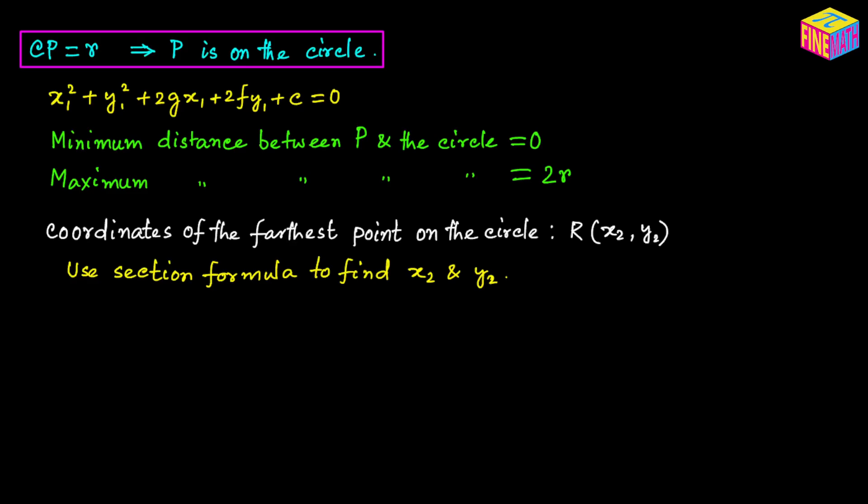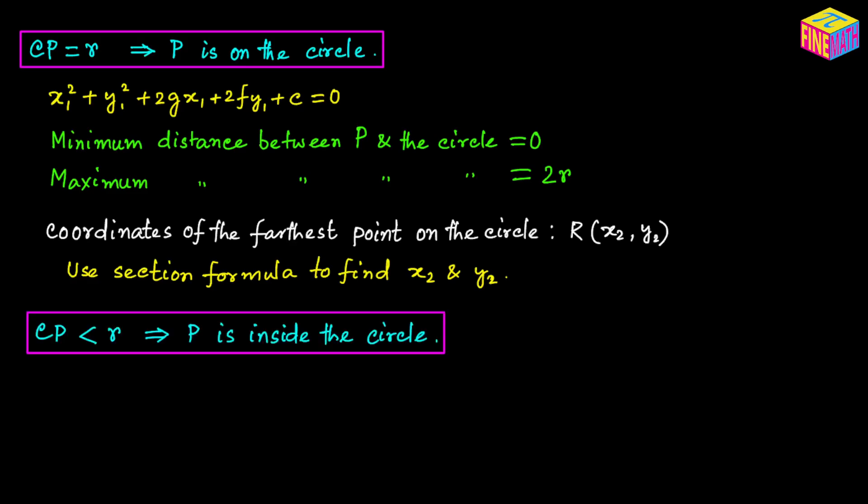We already know the coordinates of C and of P. Using the internal section formula, we should be able to calculate x₂ and y₂. I have created a separate video on the section formula — the link is in the description. Next let's talk about the third scenario where the point is inside the circle.